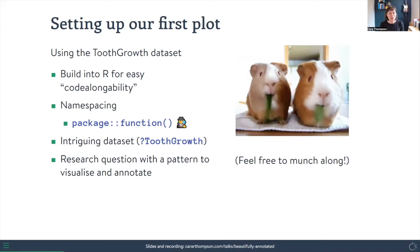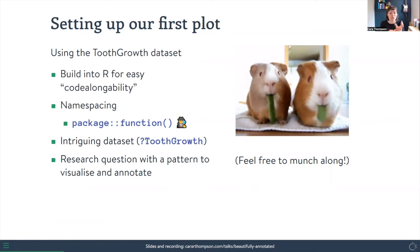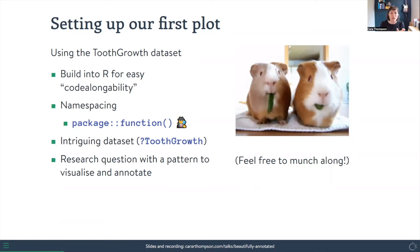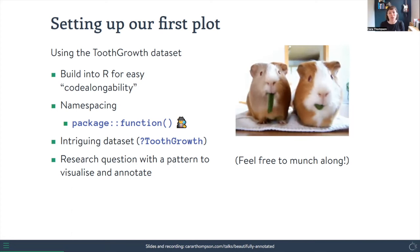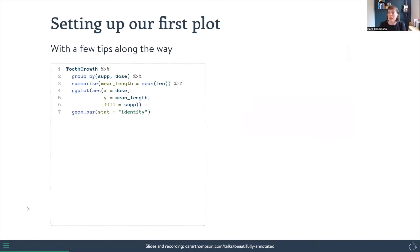Let's get coding. We're going to use the ToothGrowth dataset, which is built into R, so you can reuse this in your own time. I'm going to be using namespacing — calling the package and then the function from it. That's good practice because it avoids contaminating functions that have the same names in different packages, and it makes it easy to see which package each function comes from. This dataset has a research question with a pattern to visualize and annotate, so it's a good fit for our context.